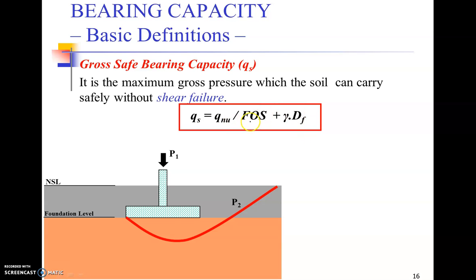If you want to determine this, it is simply equal to your net safe bearing capacity value plus the overburden pressure that you discounted initially to come up with the net ultimate bearing capacity. This entire thing is called the gross safe bearing capacity or safe bearing capacity itself.